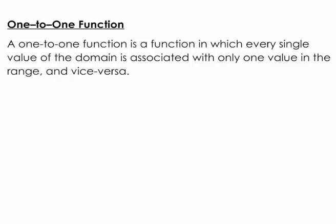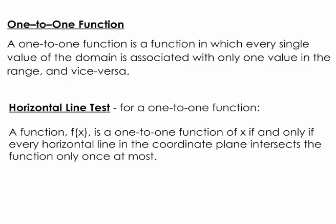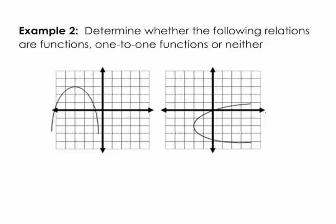Let's finish with a few more definitions. A one-to-one function is a function in which every single value in the domain is associated with one value in the range, and vice versa — only one x value associated with one y value, and vice versa. To test for a one-to-one function, we have the horizontal line test. If a function passes the horizontal line test — meaning a horizontal line crosses the graph only one time — it is one-to-one. Remember: the vertical line test determines if something is a function, and the horizontal line test determines if it's one-to-one.